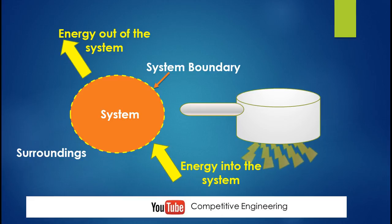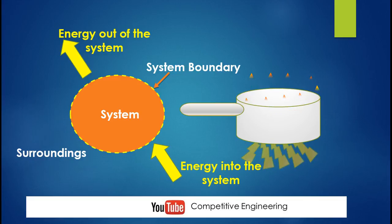After supplying the heat energy, the pan will get heated. The heated pan will dissipate energy. As we know, if we touch a heated pan, heat transfers from the pan to our body — that is why we feel very hot. From the pan, energy is transferred to the surroundings — heat energy is moving out of the system.